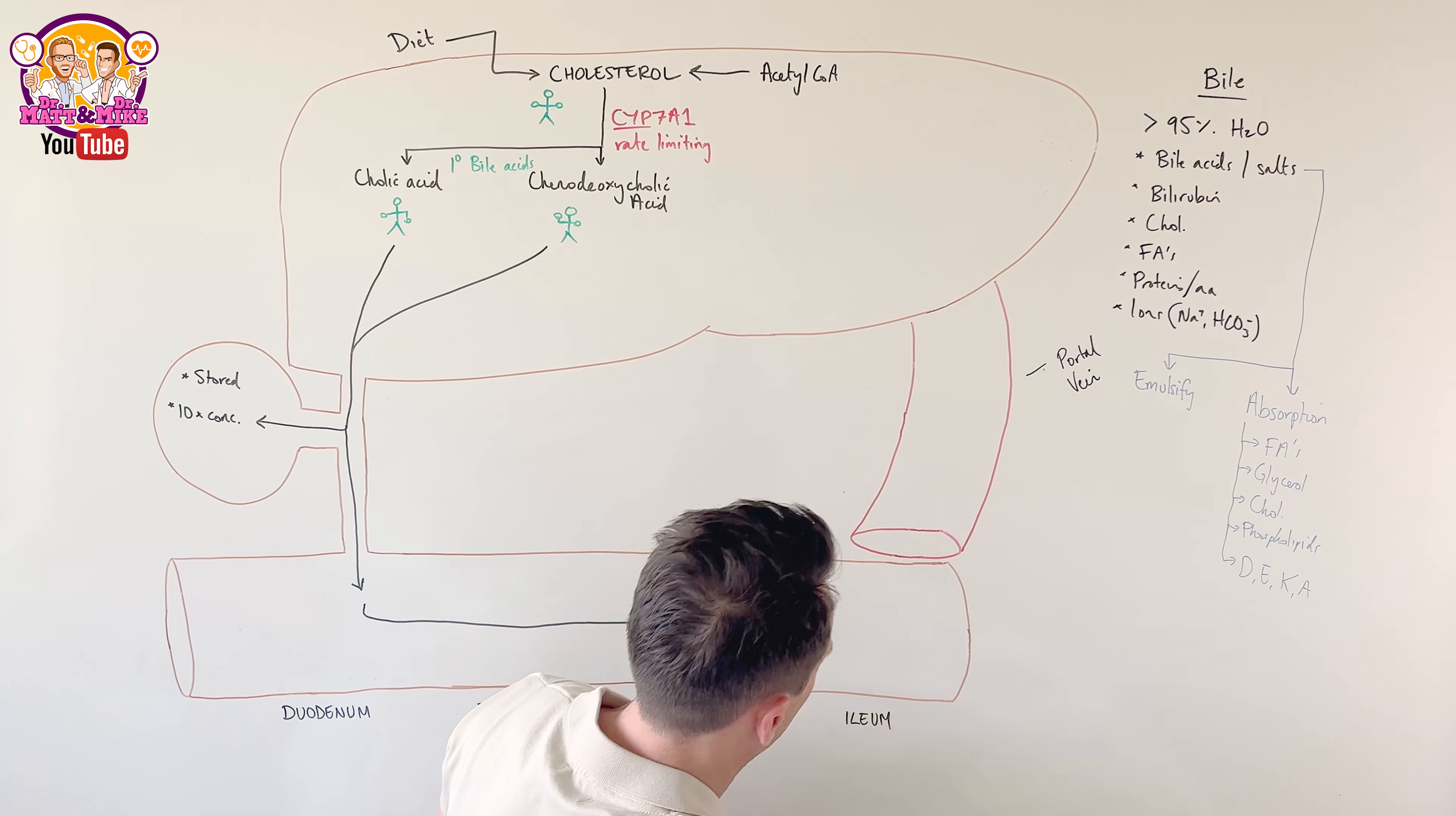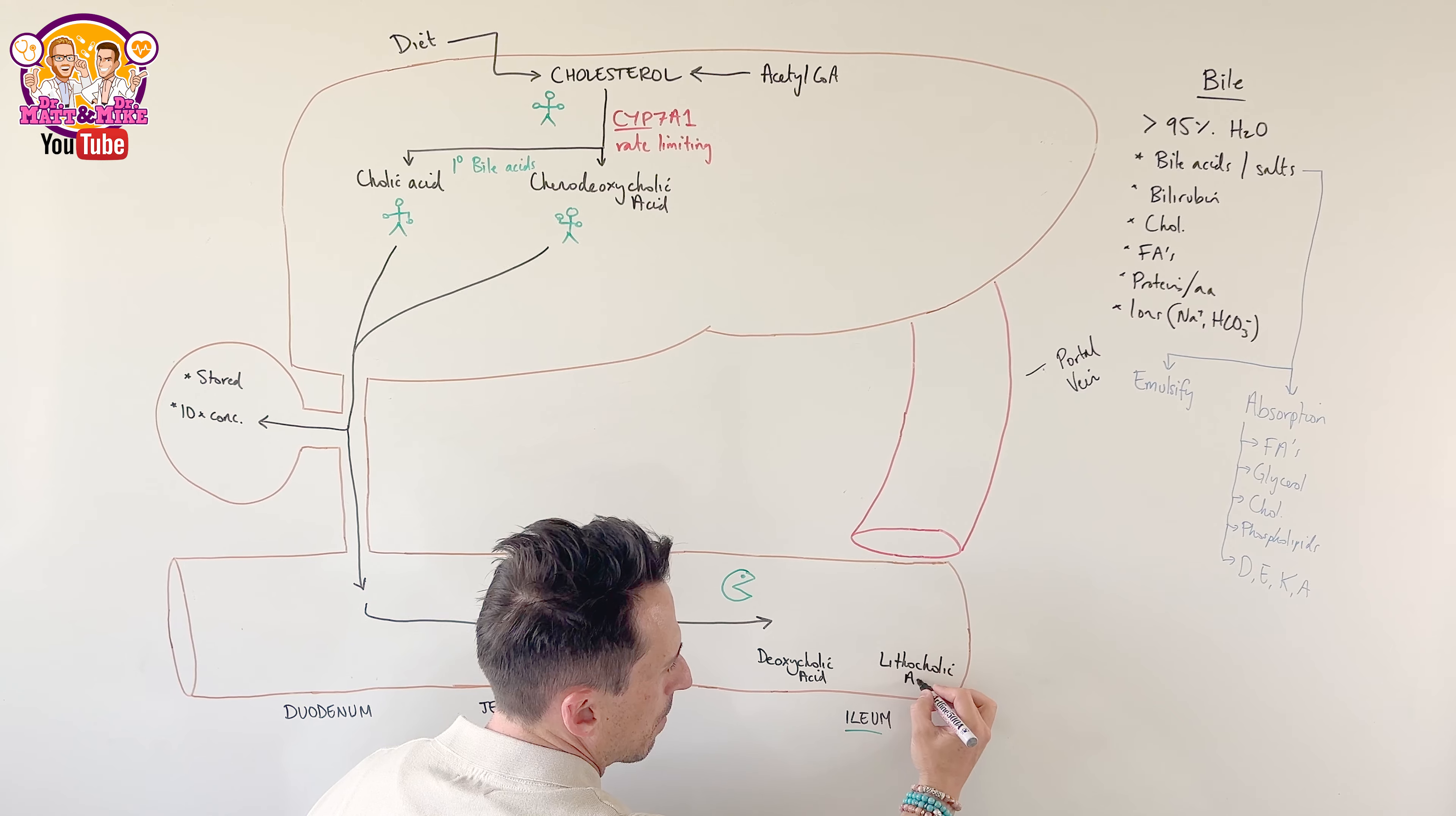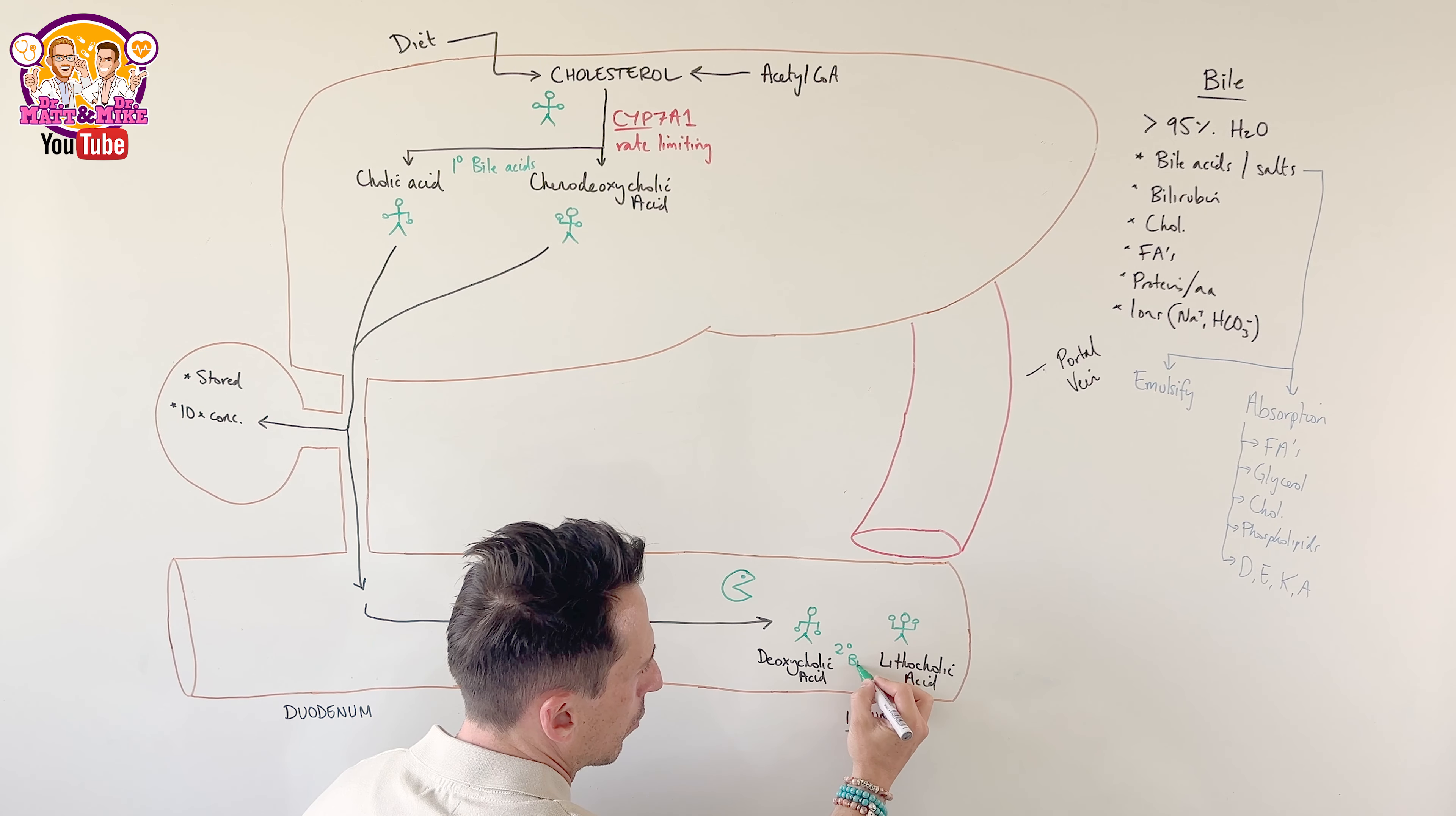Now, what happens when they get to this particular point? What we have are bacteria in our intestines, predominantly the large intestines and the distal portion of the small intestines. And this bacteria will take cholic acid and chenodeoxycholic acid and turn them into something else. They turn them into deoxycholic acid and lithocholic acid. Now, cholic acid turns into the deoxycholic acid and the chenodeoxycholic acid turns into the lithocholic acid. These are what we call our secondary bile acids.